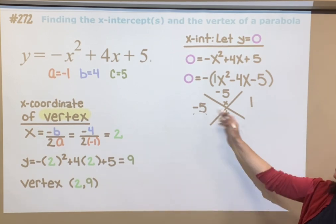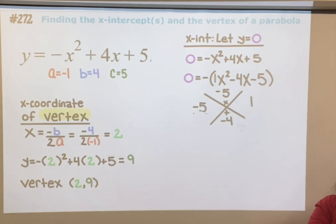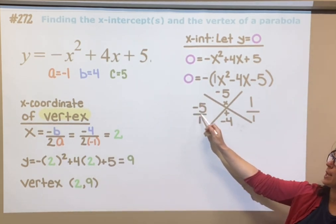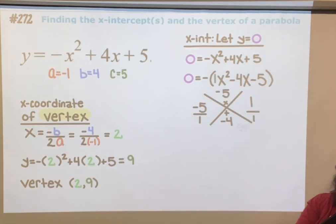We're going to put those two numbers over a, so over 1. We're ready to factor. So this is 1x minus 5 times 1x plus 1.